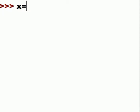Let's join dictionaries and lists together. We start by defining x, opening curly braces, with one as the key, and the value for that key will be an array: one, two, three.